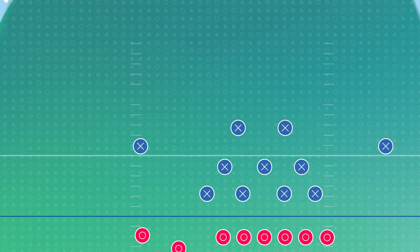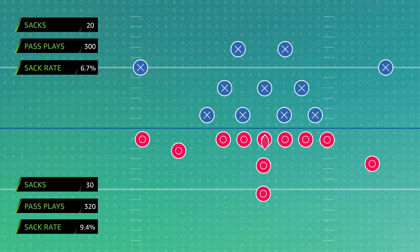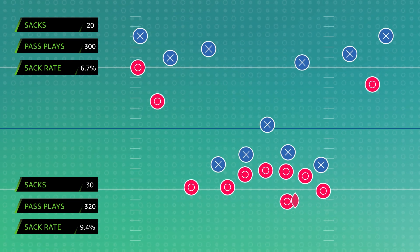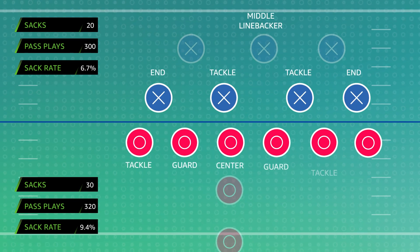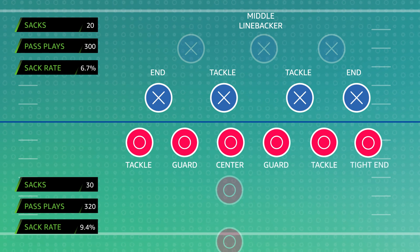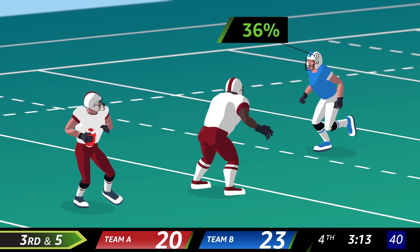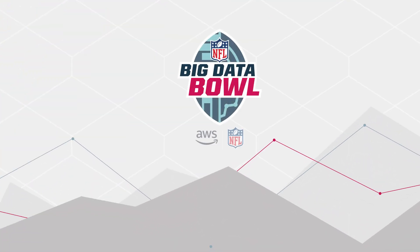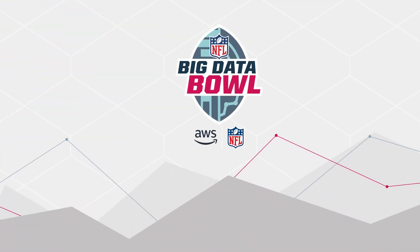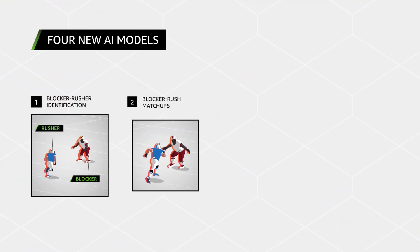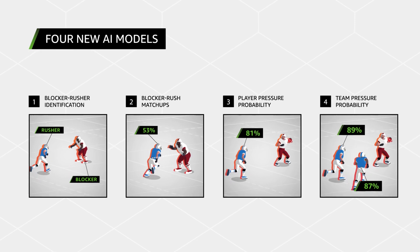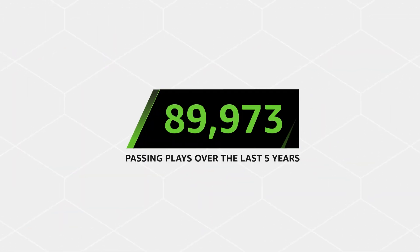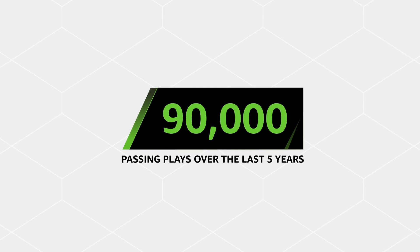Pressure probability is a new machine-learning-powered metric that takes pass rushing stats beyond the box score by measuring pressure for every pass rusher every second of every pass play. Building off submissions from the Big Data Bowl, this new stat required four new AI models developed based on over 90,000 passing plays over the last five years.